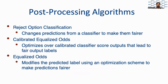Looking at post-processing algorithms: reject option classification changes predictions from a classifier to make them fairer; calibrated equalized odds optimizes over-calibrated classifier score outputs to lead to fair output labels; and equalized odds modifies the predicted label using an optimization scheme to make predictions fairer.